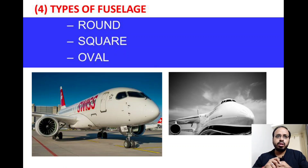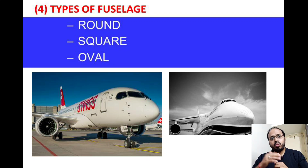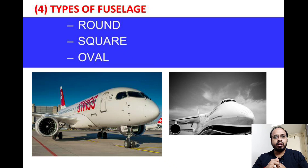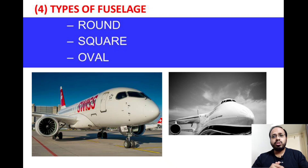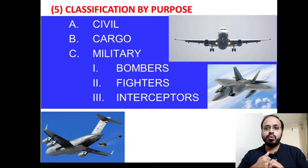The fourth classification is by types of fuselage. The shape of the fuselage is important in classifying aircraft — round, square, or oval shaped fuselage. You can find different shapes of fuselage in different categories and types of aircraft, as shown in the picture.